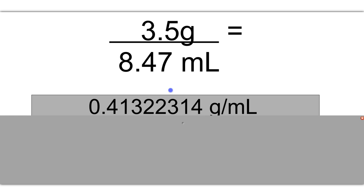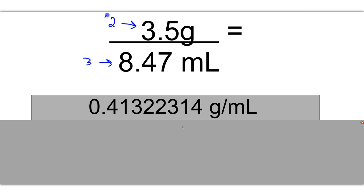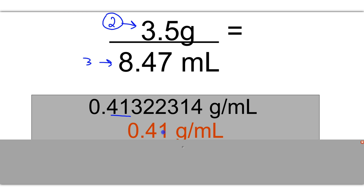For example, 3.5 divided by 8.47 gives me a raw answer of 0.41322314 grams per milliliter. However, we need to round this, because this number has two sig figs and this number has three sig figs. Two is the least of those, therefore your answer should only have two sig figs. So we'll round it off here, and that'll be 0.41.